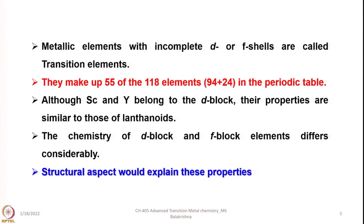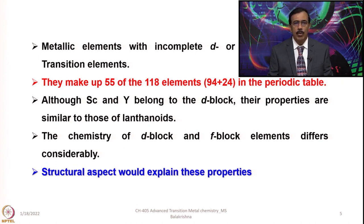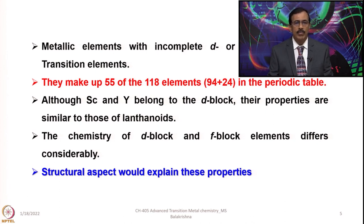Transition elements make up 55 of the 118 elements. We have 94 natural elements and 24 manmade elements, of which the 3D, 4D, and 5D series have 9 electrons each, giving 27, and the 4F and 5F series have about 28 elements. Together, we have 55 elements that constitute transition elements. Although scandium and yttrium belong to the D block, their properties are similar to those of the lanthanides.